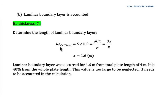We set Re_critical = 5 × 10⁵ and equate it with the Reynolds number equation ux/ν, where ν is the kinematic viscosity. Solving for x, we find x = 1.6 meters. This means the laminar boundary layer covers 1.6 meters out of the total 4-meter plate length — that is 40% of the plate — which is too large to neglect and must be accounted for.